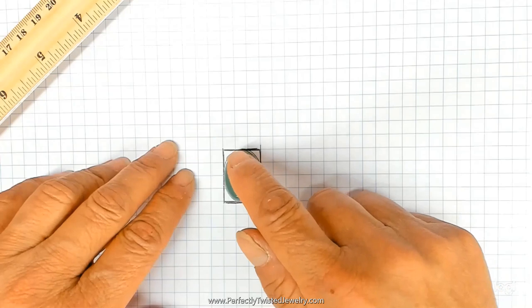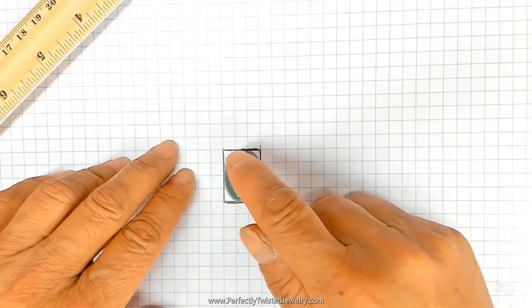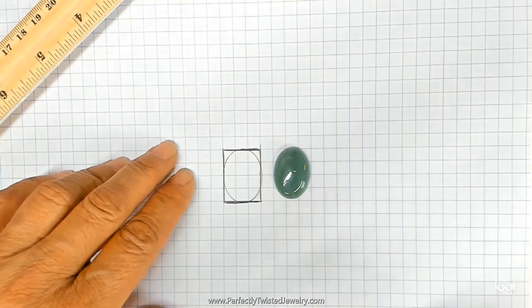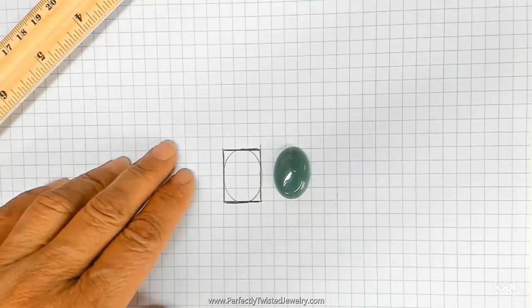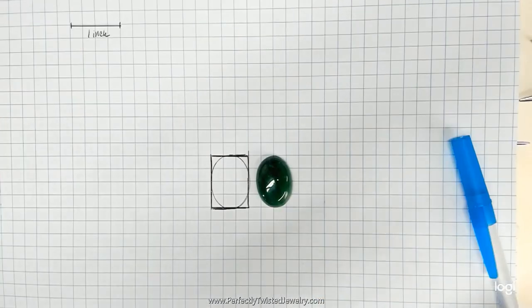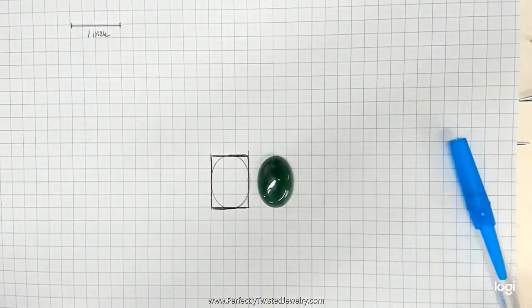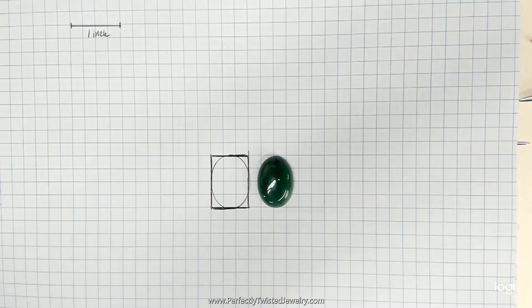After that, I trace the shape of the stone within that box. Setting the grid paper up like this and tracing the stone helps me to visualize where I might want these prongs on this cabochon.